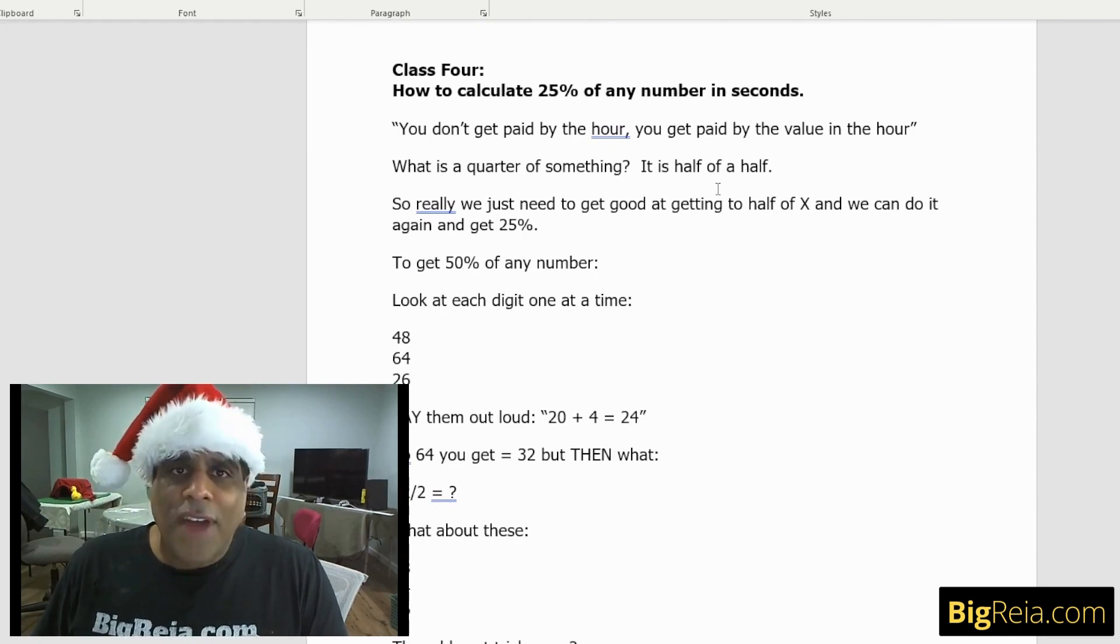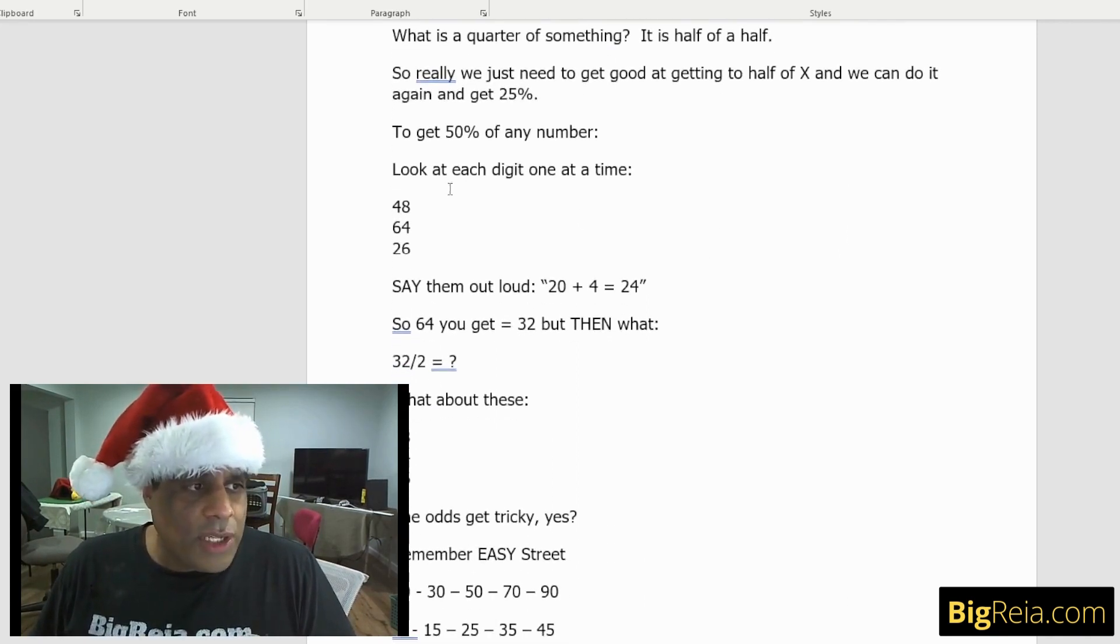What is a quarter of something? It's half of a half, right? So we really need to get good at just halving a number and getting half of a number very quickly, and then doing that again and we get 25%. This is depreciation, 25%. We're going to use this a lot to get half of a number.